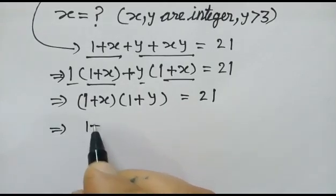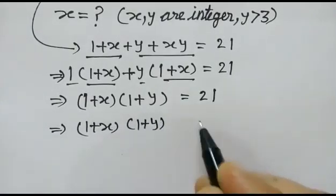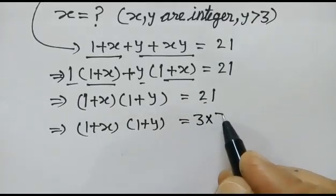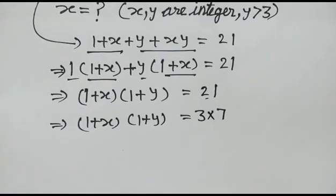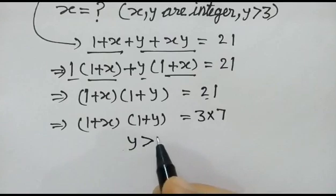Now, 1 plus x, 1 plus y, 21, 3 into 7. Condition is given y is greater than 3.